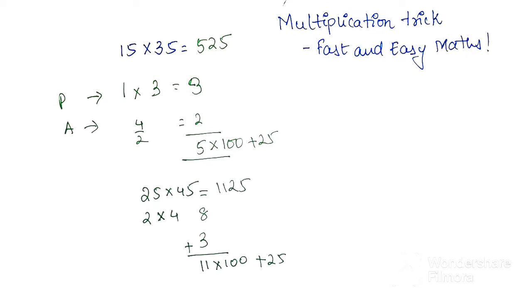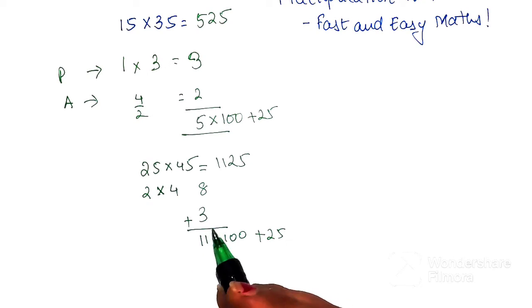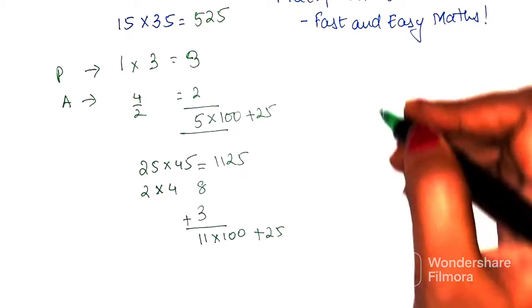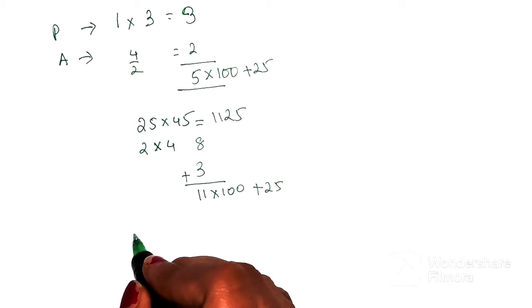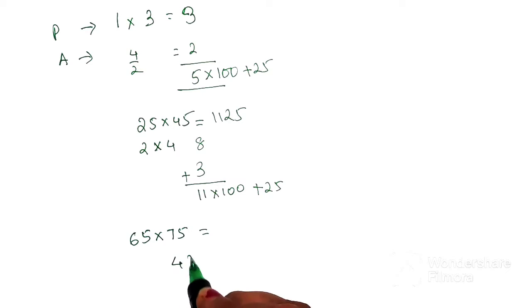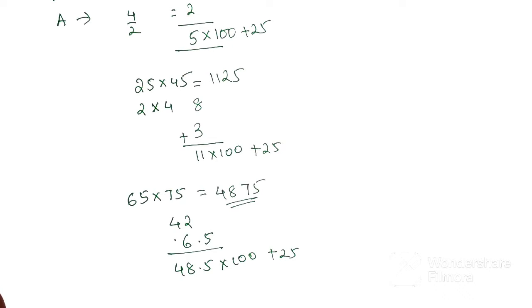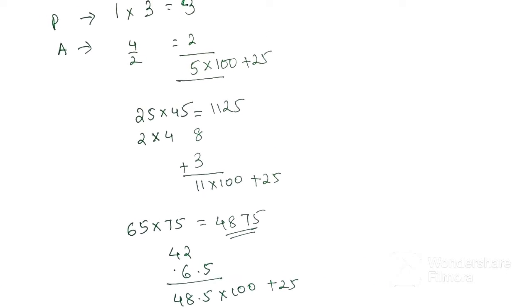You saw how easy this was, but what if one of the numbers is odd and the addition comes out to be odd? Then the average will get you a decimal. Let's quickly look at that scenario: 65 into 75. We get 6 into 7, which is 42. 6 plus 7 gets you 13, divided by 2 gets you 6.5. Adding them we get 48.5, into 100 gets you 4850 plus 25, so your final answer is 4875. I hope you all have gotten the idea of doing this particular trick.